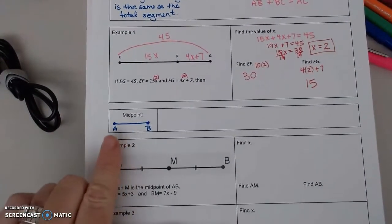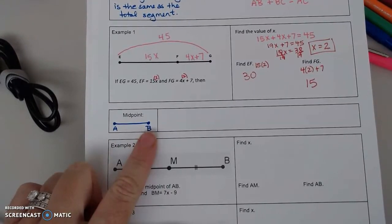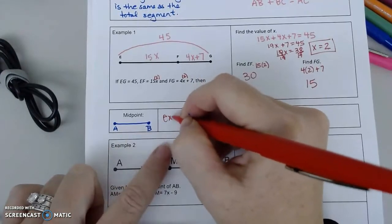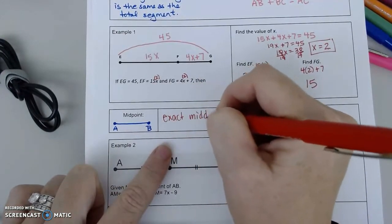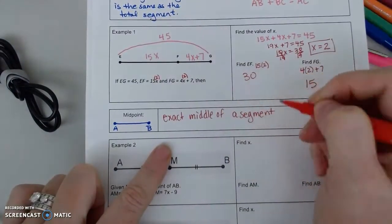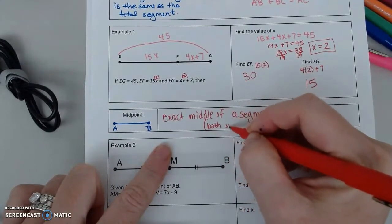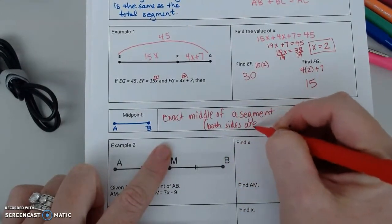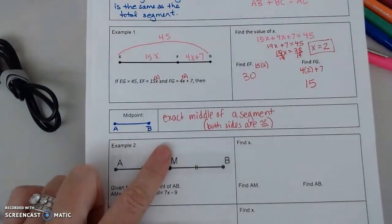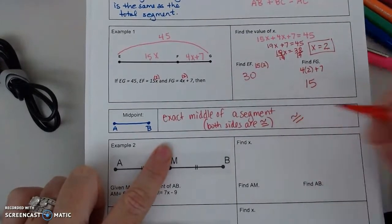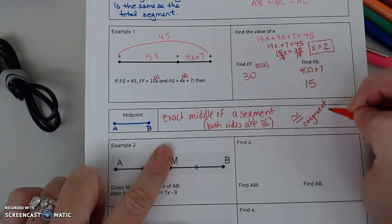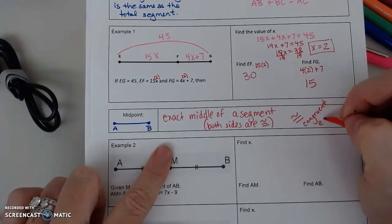Midpoint. If I have segment AB and I know that there is a point C that is the midpoint, midpoint is a fancy word for the exact middle of a segment. Which means, if something is in the middle, it means that both sides are equal. And in geometry, we don't say equal. We say congruent. That means that they have the same measure. So that with a little squiggly on top, that's the symbol for congruent. And we use that for geometric sizes. Congruent, which means equal.